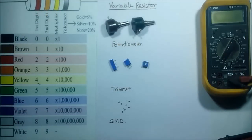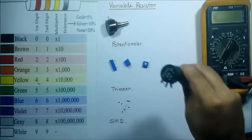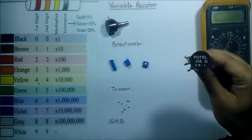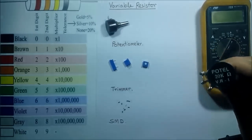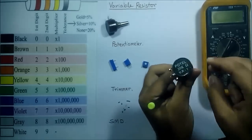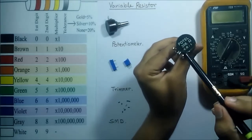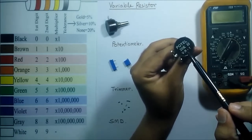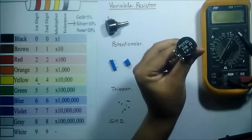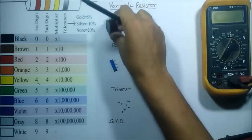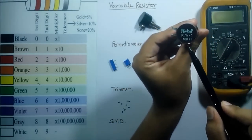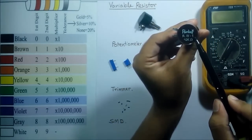Now for variable resistors, first come to the potentiometer. This is a potentiometer where the resistance value is 20K as written on it, and the wattage is 1 watt. This is another potentiometer of 10K and the wattage is also 1 watt.